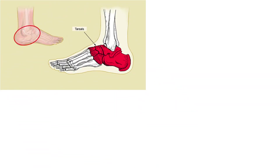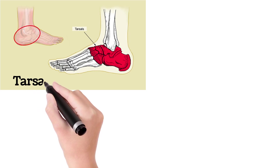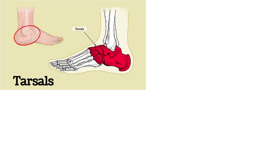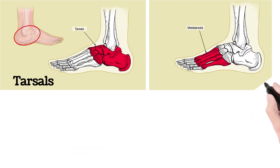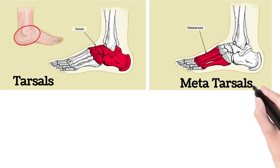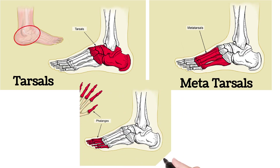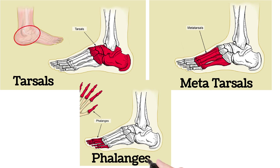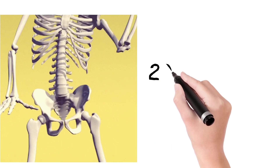Below the knee there are two bones called the tibia and fibula. In the ankle region there are ankle bones called tarsals, in the feet there are foot bones called metatarsals, and in the toes there are toe bones called phalanges.